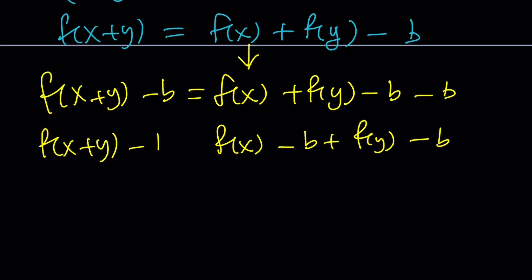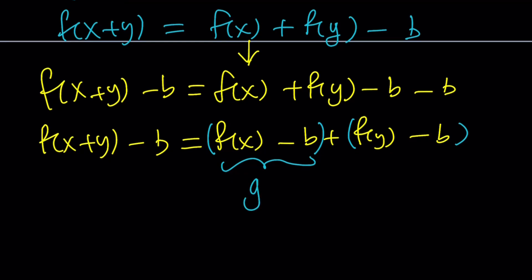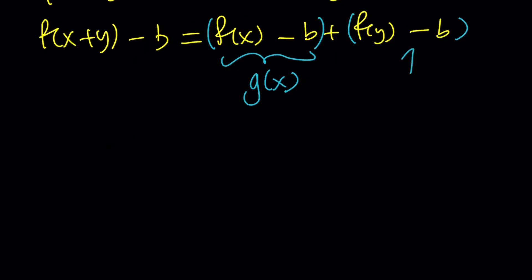We're going to use substitution one more time in a different way. We're going to replace f(x) - b with another function, g(x). Since f(x) is continuous and b is a constant, g(x) will also be continuous. So this is cool because this is g(y), this is g(x + y). We get the following: g(x + y) equals g(x) plus g(y) by the definition of g(x).